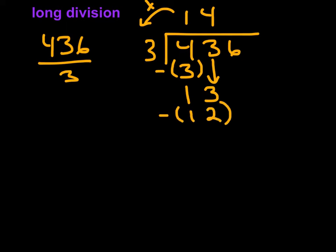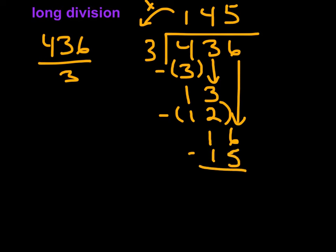I want to subtract all of this — or add the negative of it if you want to think of it that way. Add negative 12. So 13 plus negative 12 is positive 1. I bring down the next number, 6. Repeat the process again: 3 times what is something less than 16? How many 3s are in 16? That would be 5. 5 times 3 is 15. I subtract it, and this gives me 1 left over. So my remainder is 1.